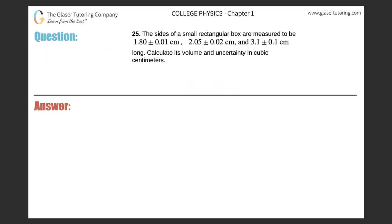Number 25. The sides of a small rectangular box are measured to be 1.8 plus or minus 0.01 centimeters, 2.05 plus or minus 0.02 centimeters, and 3.1 plus or minus 0.1 centimeters. Calculate its volume and uncertainty in cubic centimeters.